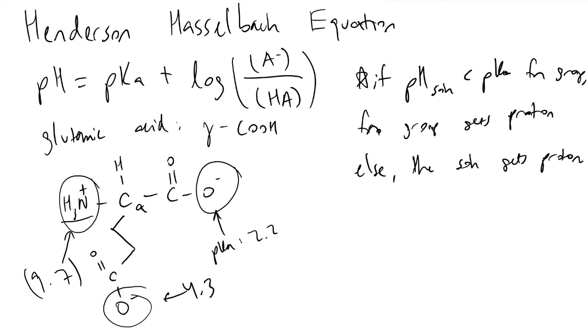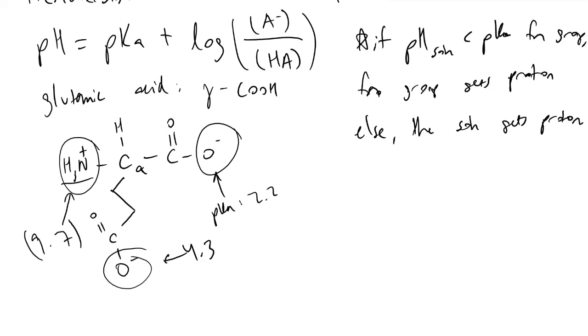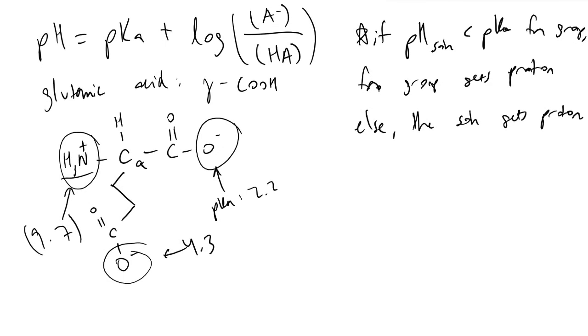So what are the boundaries that we are interested in? When the pH of solution reaches a value of 2.2, when it reaches a value of 4.3, and when it reaches a value of 9.7. We will have four regions of interest here that we can consider.